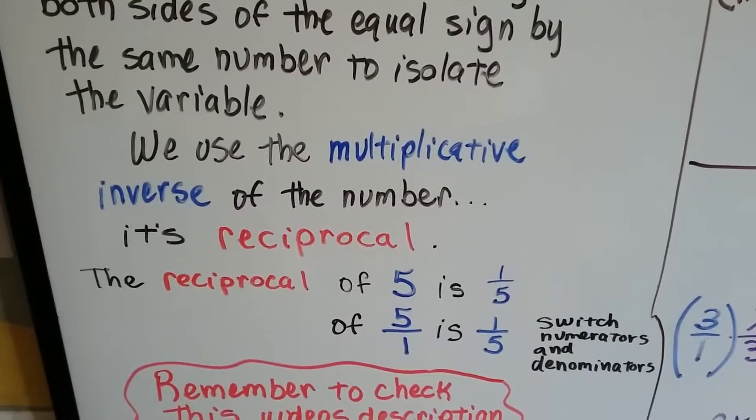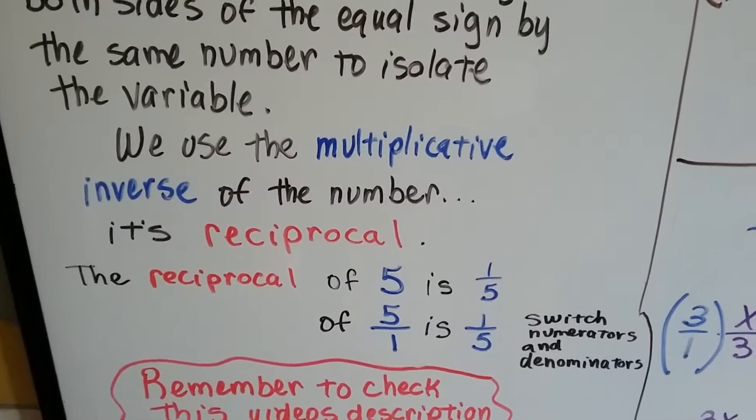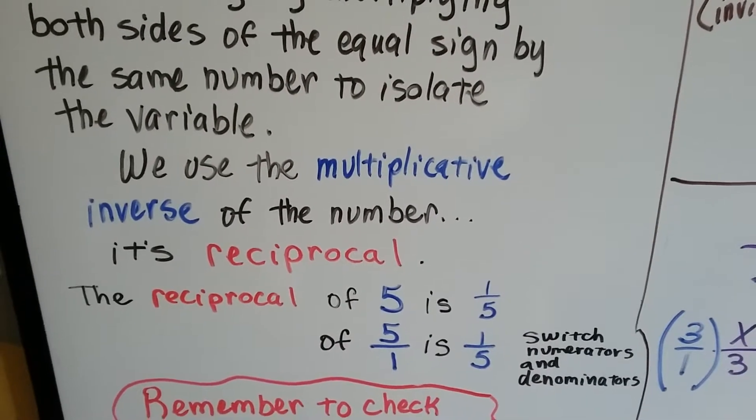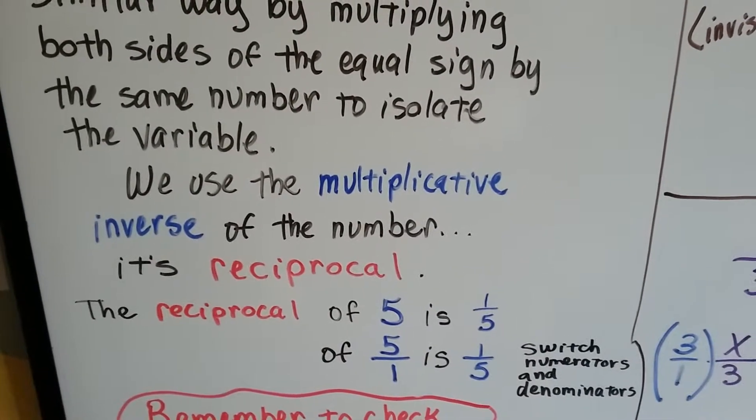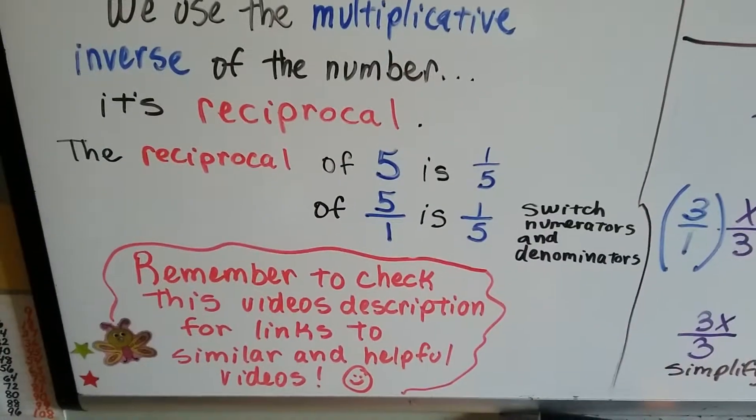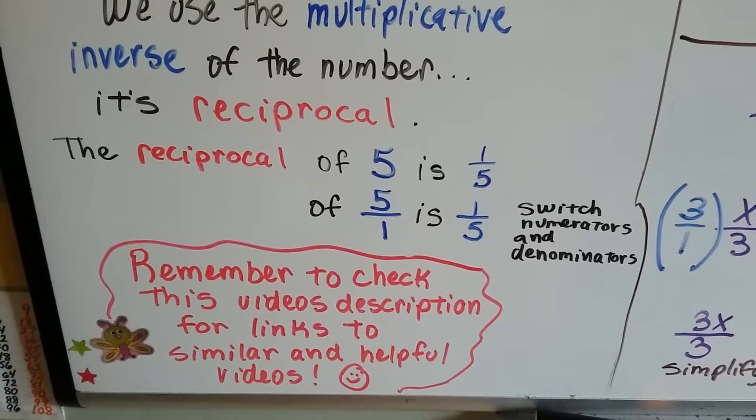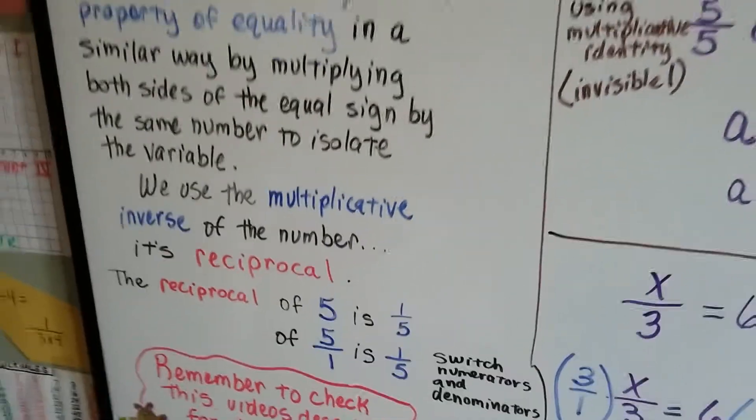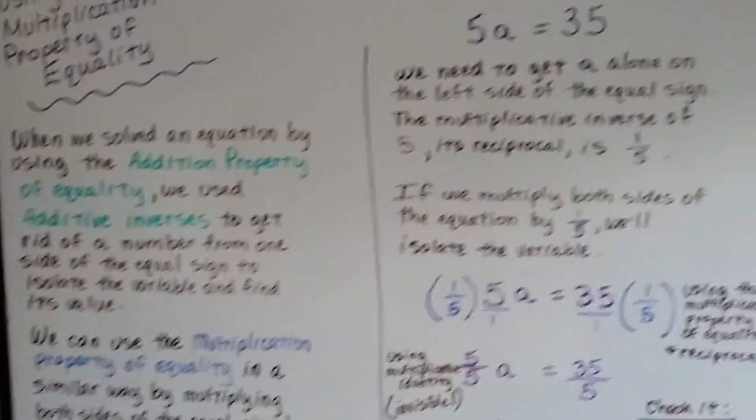The reciprocal of five would be one-fifth, because we could say five is five over one, and when we switch the numerator and denominators, the reciprocal becomes one-fifth. It's flipped around. Remember to check this video's description for links to similar and helpful videos. I'll have stuff about the reciprocal and all of that stuff, the additive inverse and everything will be in the description.